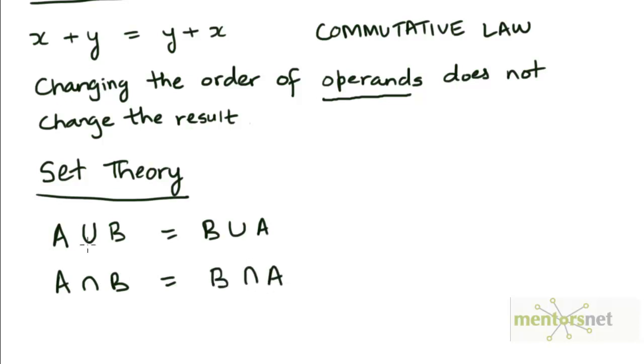The operands here are the sets A and B. If we switch the order of the operands, it doesn't make any difference to the result of the operation, whether it's union or intersection. Both union and intersection satisfy the commutative law.